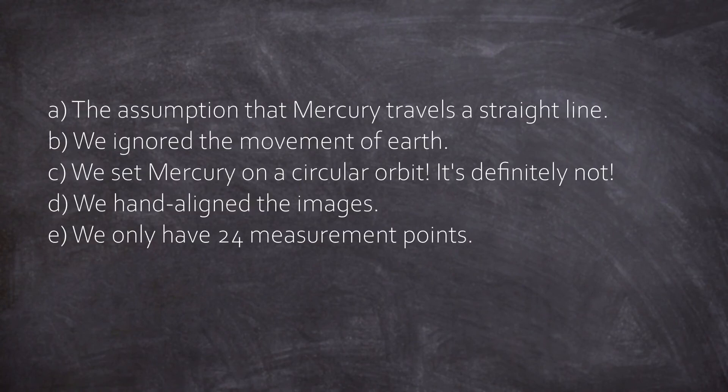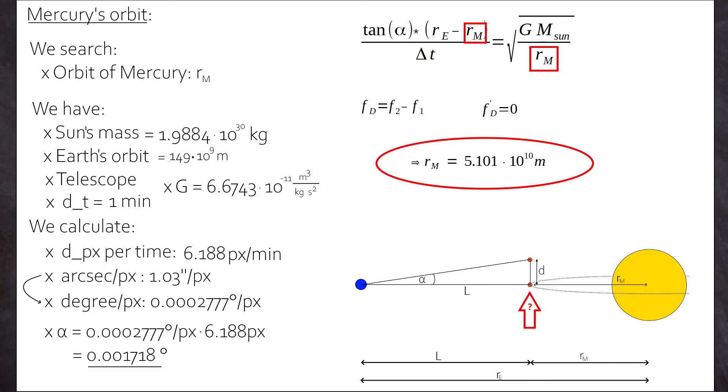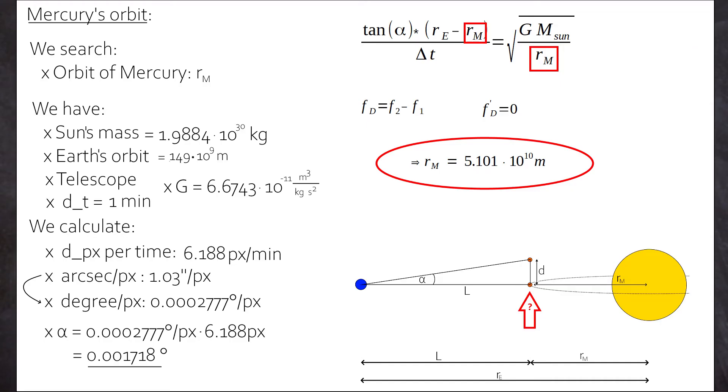So as a scientist, we think about possible errors. A, the assumption that Mercury travels a straight line. Second, we ignore the movement of the Earth. C, we set Mercury on a circular orbit. It's definitely not. D, we hand-aligned the images. E, we only have 24 measurement points. But after all, we're so close. It stuns me. Because we just calculated the orbit of Mercury by just watching it crossing the Sun's disk for slightly over an hour. And that's it. That's how you can do it.